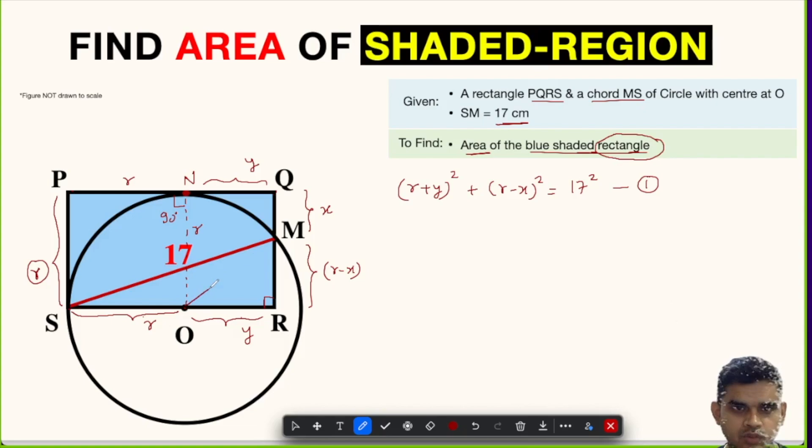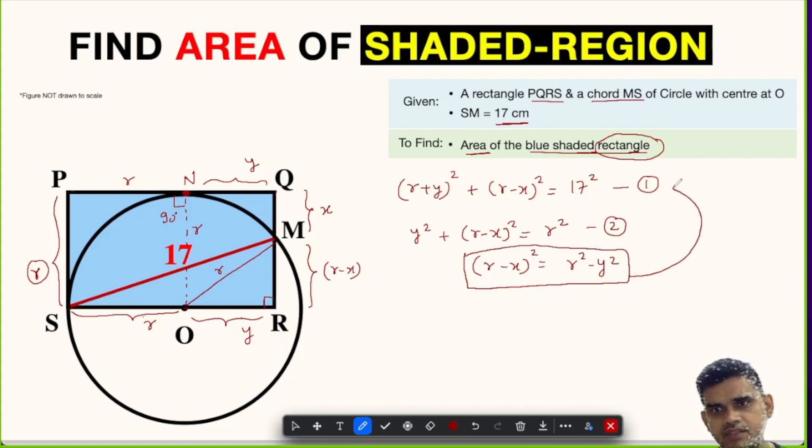Likewise, if we join O to M, this will be radius, and in triangle ORM we can again apply Pythagorean theorem. So this will give us Y² + (R - X)² = R². This is equation number 2. So from equation 2, we can rewrite it as (R - X)² = R² - Y².